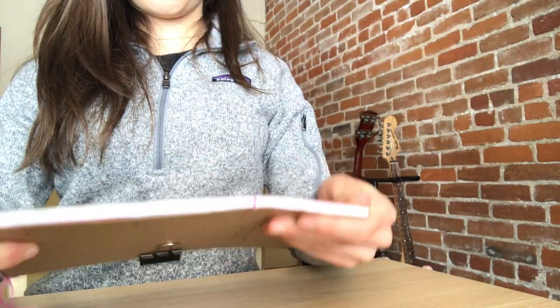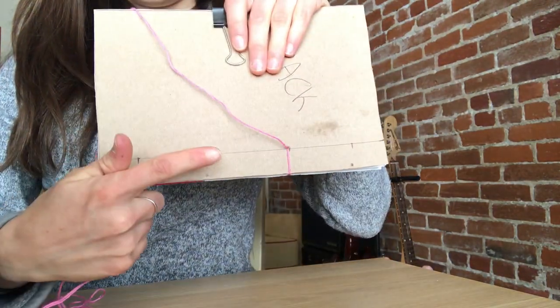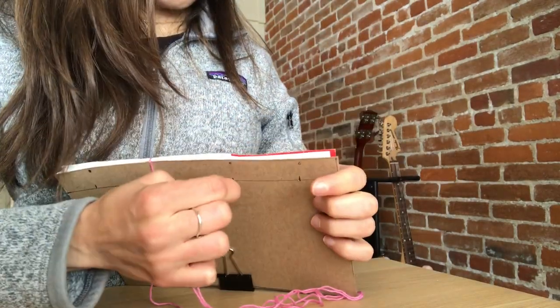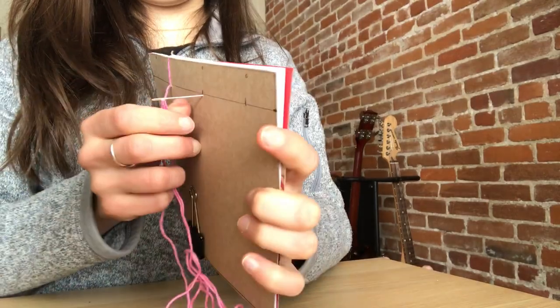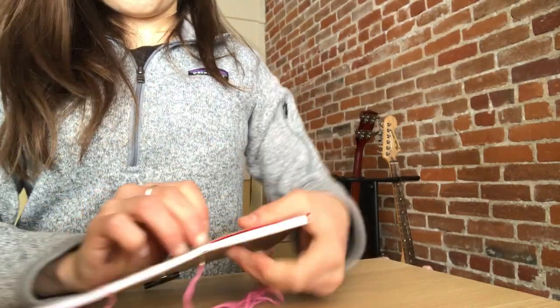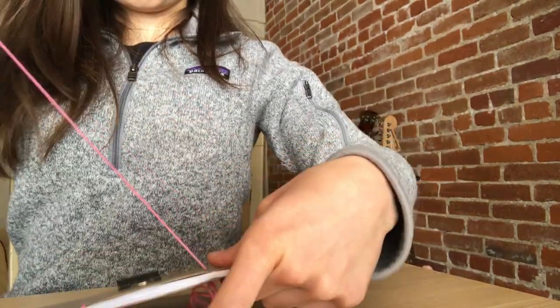After that, you're going to poke your needle through the third hole. So you're going from the back to the front of your book, poke it through that hole, pull tight.